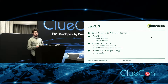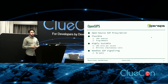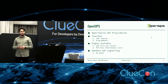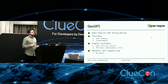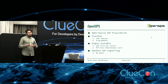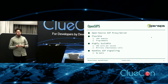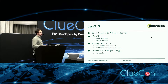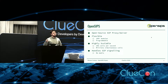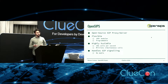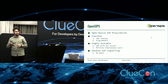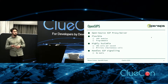It is highly scalable. It's written in C, and you can easily handle 20,000 calls per second and have millions of simultaneous calls. The main reason is that we don't handle media. This offers us a lot of flexibility and scalability — we don't have to be in the path of the entire call from the SIP signaling, and we don't have to handle real-time protocols.